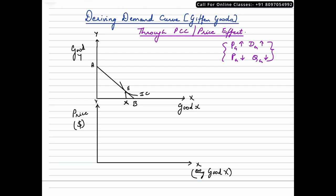So in this diagram, we have good Y on the Y axis and good X on the X axis. In our first panel, let me call it as panel Roman 1 and Roman 2. In panel 1, we have good Y on the Y axis and good X on the X axis. Now which of these is a Giffen good? Good X is a Giffen good. Let me just jot that down - Giffen good. So here also it is by default assumed that it is a Giffen good.